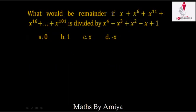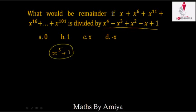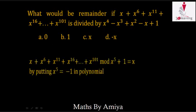Our question has divisor x⁴ - x³ + x² - x + 1. We can say this is a type 2 divisor — the pattern is plus, minus, plus, minus — so this is a factor of x⁵ + 1. The highest power is 4, so 4 + 1 = 5. We now have the simplest multiple of our given divisor.